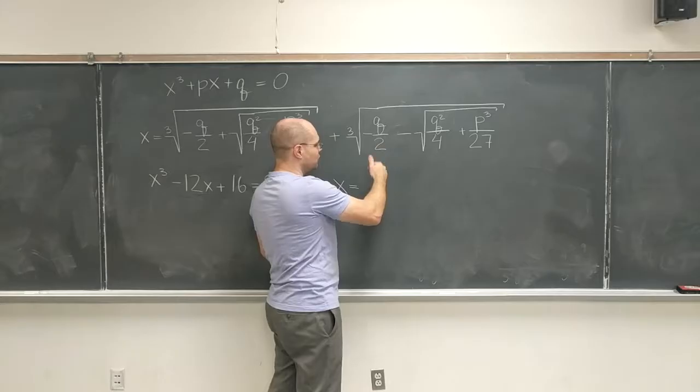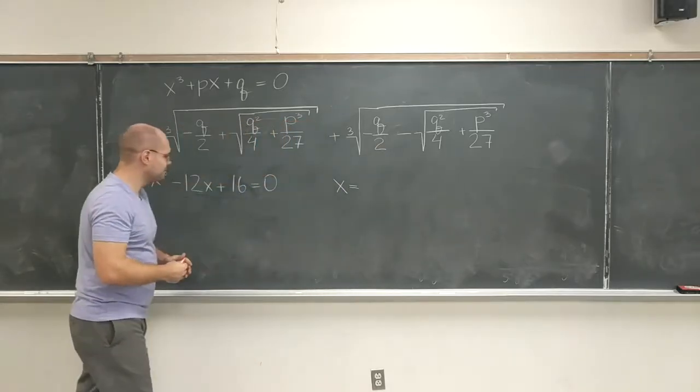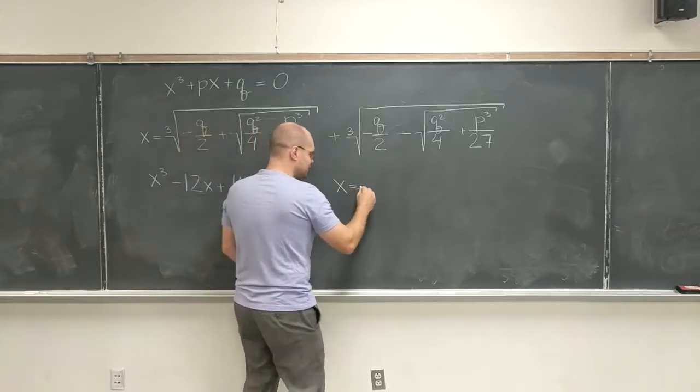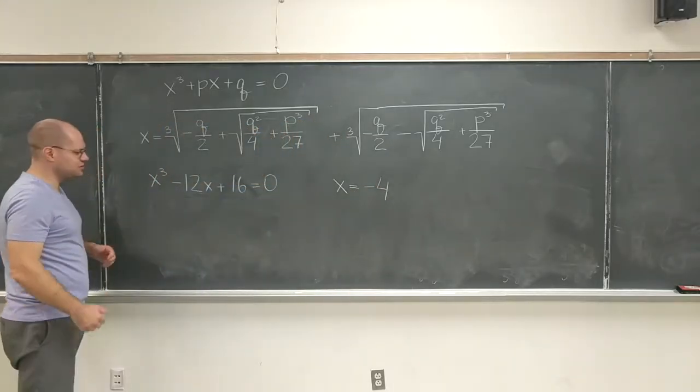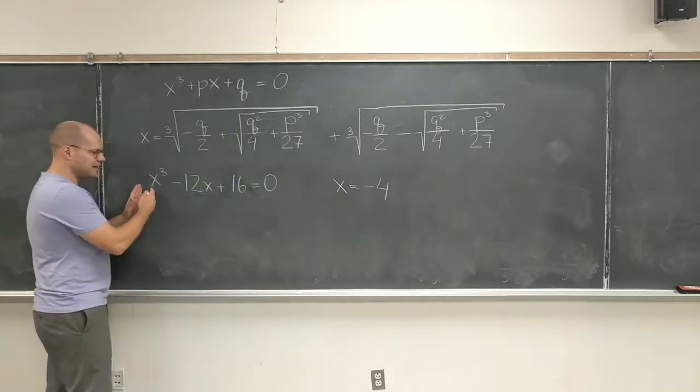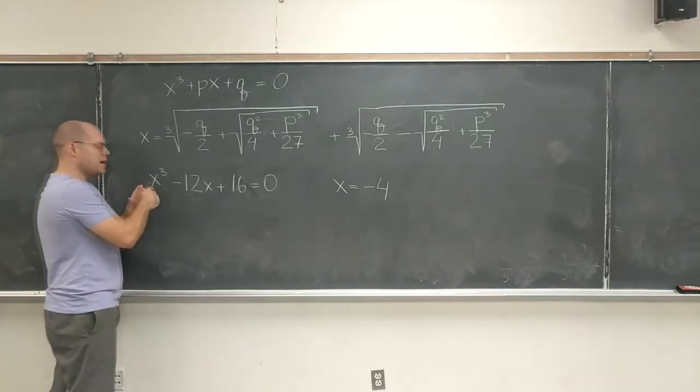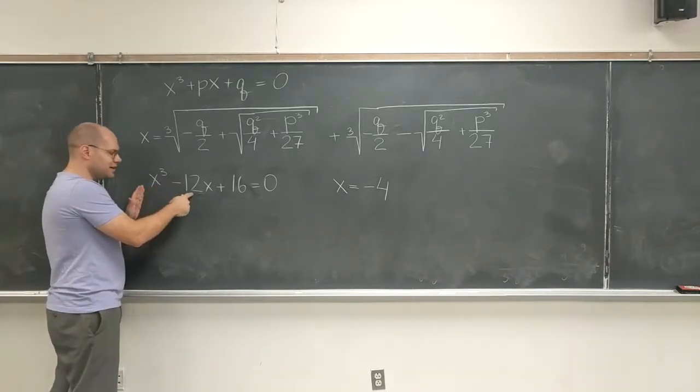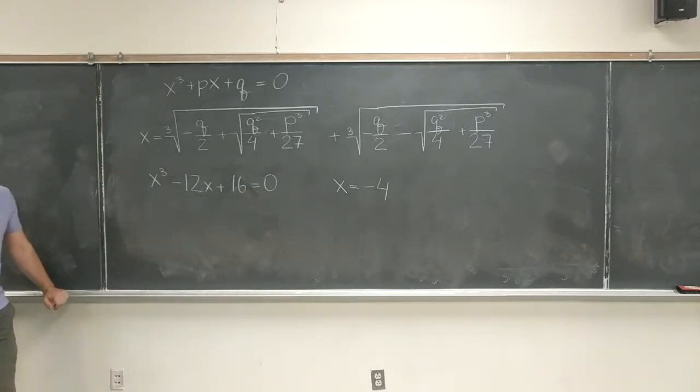Plus cubic root of minus 8, which is another minus 2. So we arrive at minus 4. And what I would have liked to do first is to check that this actually fits, because you can kind of spot it simply by looking at plug-in 4. You have minus 64 plus 48 plus 16, 0. So the formula worked.